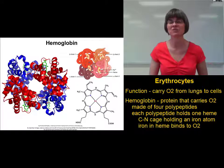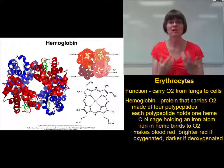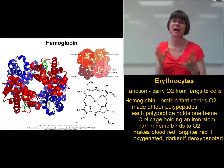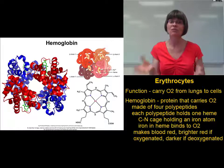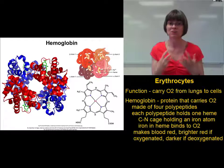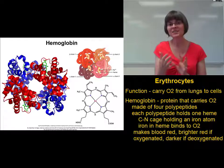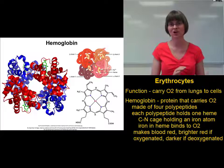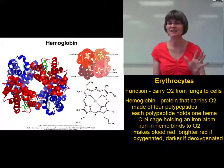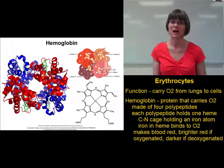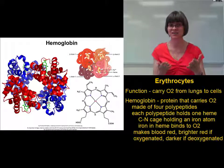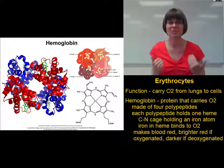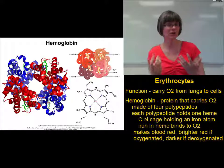Hemoglobin is also what makes your blood red. The more hemoglobin you have, the redder your blood will be. Hemoglobin changes color depending on whether it's fully oxygenated or not. Fully oxygenated hemoglobin is very bright red, so the blood in your arteries is very bright red. Deoxygenated hemoglobin is a darker red, so blood in your veins is a darker red. It's important to point out that blood is never blue — at least human blood isn't. In textbooks, oxygenated blood is colored red and deoxygenated blood blue to tell them apart, but that's just fake coloring. Real deoxygenated blood is red, just a little darker.